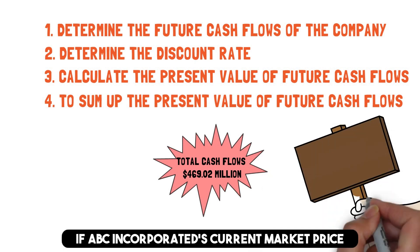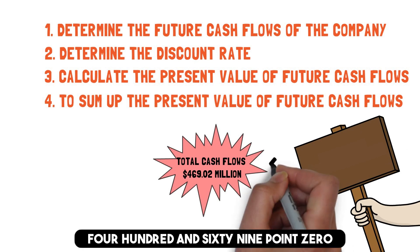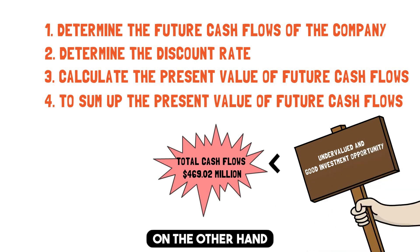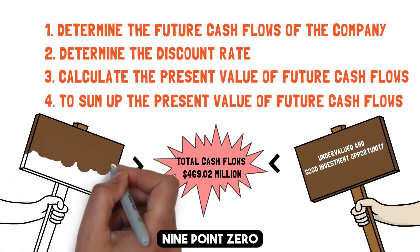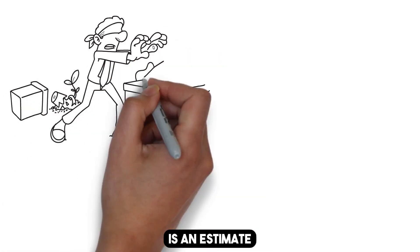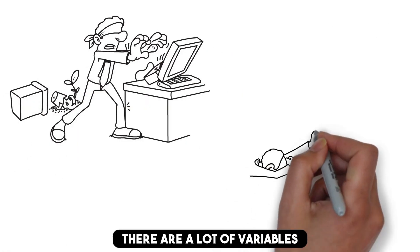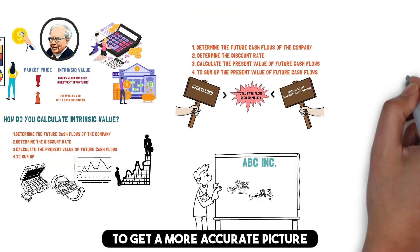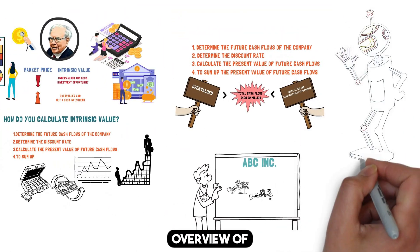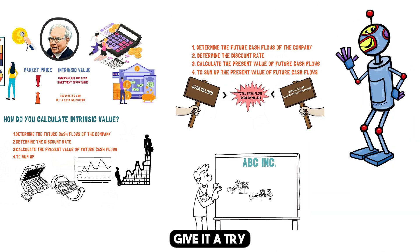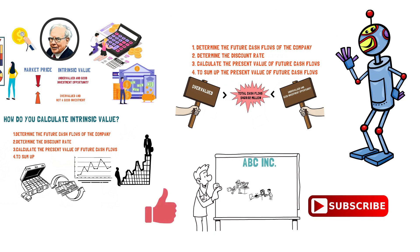If ABC Inc.'s current market price is less than $469.02 million, we can consider it undervalued and a good investment opportunity. On the other hand, if the market price is more than $469.02 million, it may indicate that the stock is overvalued. It's important to note that calculating the intrinsic value of a stock is an estimate, not an exact science. There are a lot of variables that can impact a company's future cash flows, and it's always a good idea to use a variety of sources to get a more accurate picture. So that's a basic overview of how to calculate the intrinsic value of a stock, a key component of Warren Buffett's investment strategy. Give it a try and see if it can help you make better investment decisions. Thanks for watching.